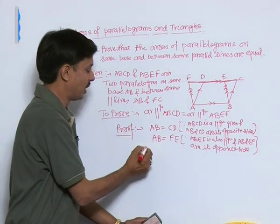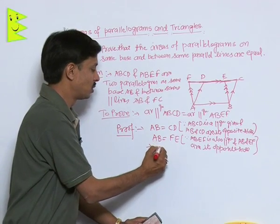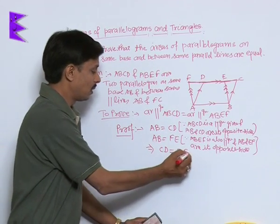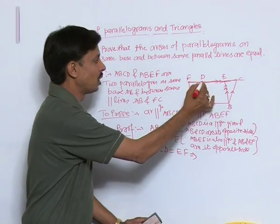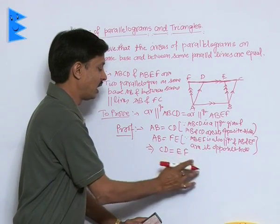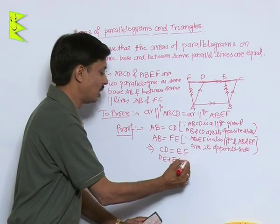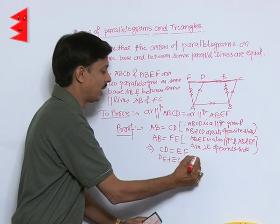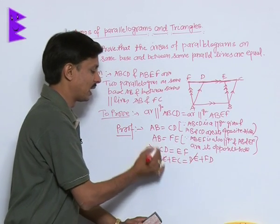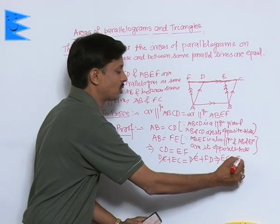Since the left-hand side of both relations is AB, we can conclude that CD equals EF. Now, CD can be written as DE plus EC, and EF can be written as DE plus FD. The DE cancels from both sides, giving us the result that EC equals FD.